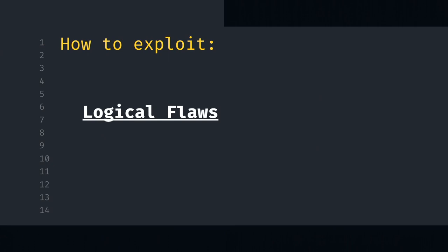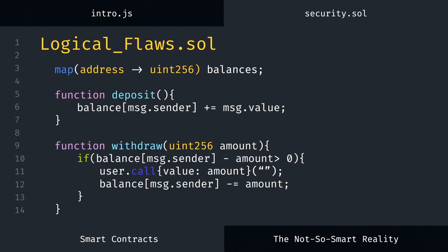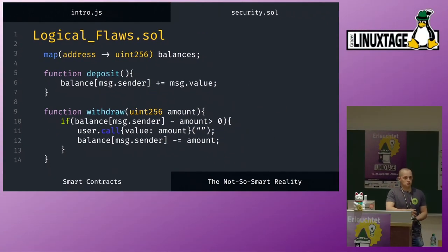Next we're going to look at the vulnerability that every programming language has — human error and logical flaws. Misproducing or misunderstanding code. For this we have another simple smart contract I built: a storage where people can send their money in and then withdraw it. It has a deposit function and a withdraw function. In the deposit function we use a mapping of addresses to balances. In the withdraw function we check if the balance minus the amount to withdraw is greater than zero, and if so, we send the person their money and decrease their balance. Looks rather okay, right?